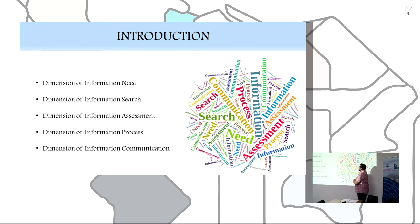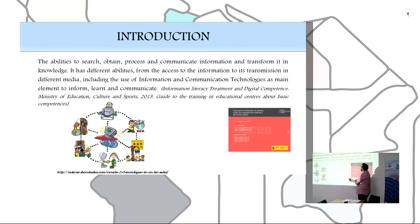Information literacy is composed by five dimensions: dimension of information need, information search, information evaluation, information process, and information communication. The definition is created by the Ministry of Education from Spain and we find it inside the guide to the training where the educational center supports basic competencies.